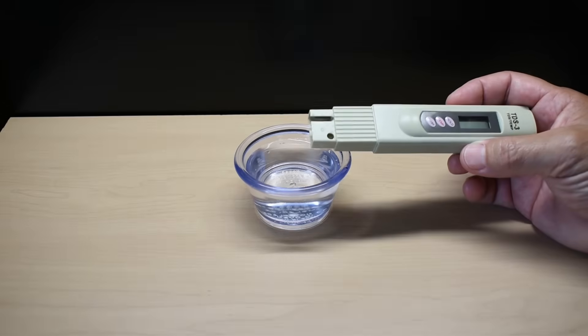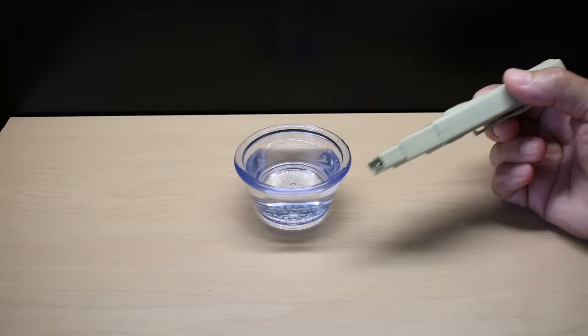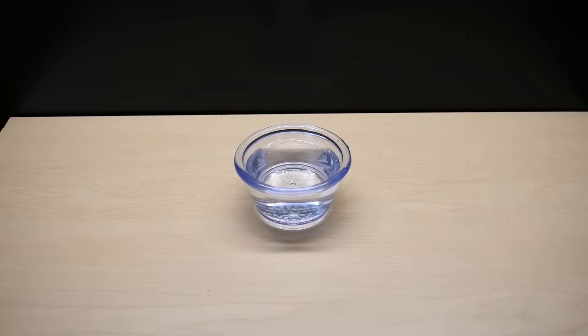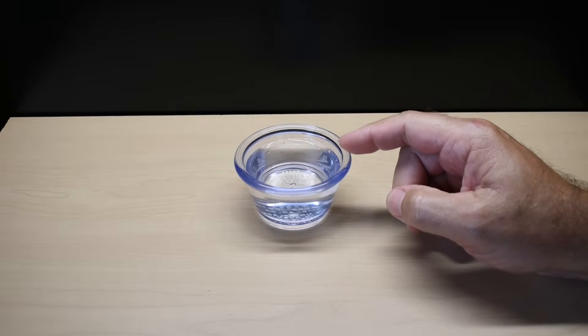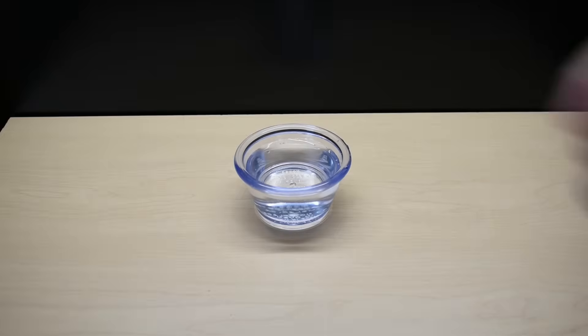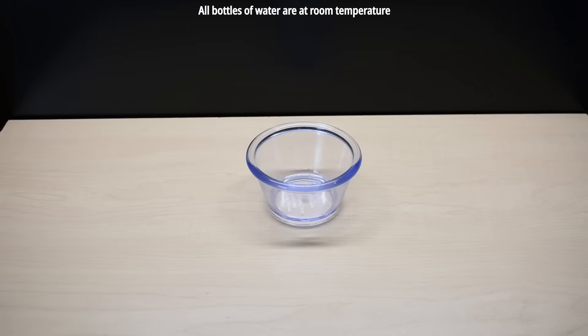Before the TDS is measured for each one of the bottles of water, I'm going to take the end of this, dip it in distilled water, shake it off. The water that's in this little cup is going to be dumped out. I'm going to wipe everything dry with a paper towel after rinsing it with distilled water.